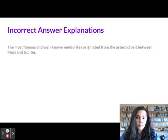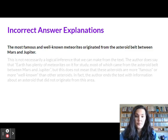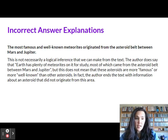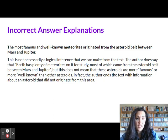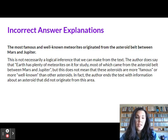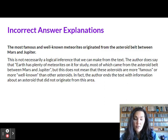Here's the last one. Option D: the most famous and well-known meteorites originated from the asteroid belt between Mars and Jupiter. This is not necessarily a logical inference we can make from the text. The author does say that the Earth has plenty of meteorites on it to study, most of which come from the asteroid belt between Mars and Jupiter, but this does not mean that these asteroids are more famous or well-known than other asteroids. In fact, the author ends the text with information about an asteroid that did not originate from Mars or Jupiter.